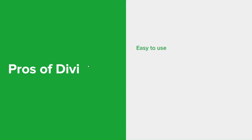Let's talk about some of the pros and cons of using Divi. Divi is quite easy to use — it has a drag-and-drop interface that makes it easy to create a website without coding. The theme itself is really flexible and can be used to create a variety of websites from simple blogs to complex e-commerce sites. It's really powerful, includes over 200 pre-made layouts, a drag-and-drop interface, and a variety of design settings. Divi is also really affordable — it's a one-time purchase that includes lifetime updates, and it has a large community of users and developers, meaning there are plenty of resources available.